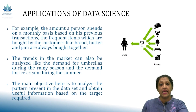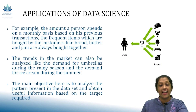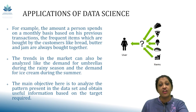For example, the amount a person spends monthly based on their previous transactions, the frequent items or products which are bought by customers — like bread, butter, and jam are always bought together. Trends in the market can also be analyzed, like the demand for umbrellas during the rainy season and demand for ice cream during summer. The main objective here is to analyze patterns and obtain useful information based on the target required. A recommended system gives the user recommendations as per their likes and dislikes, and the user will come to know the information of frequently purchased products.